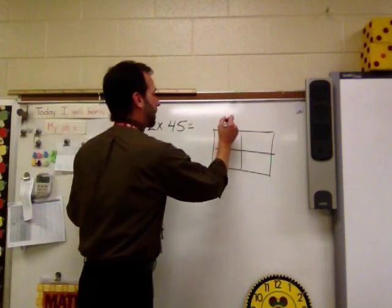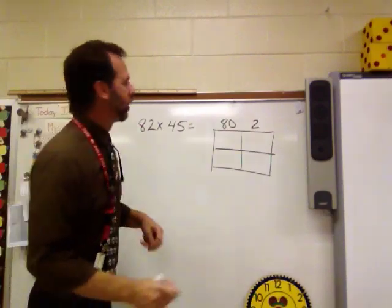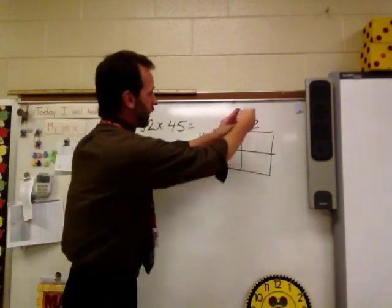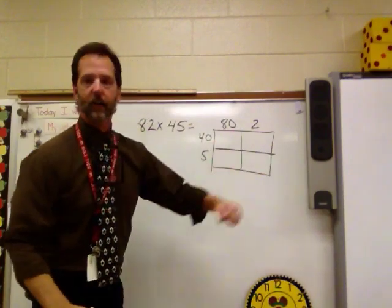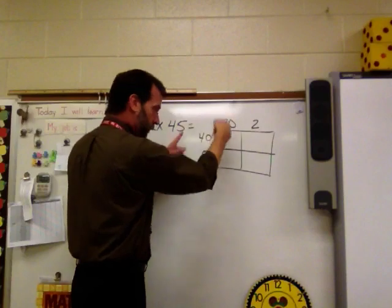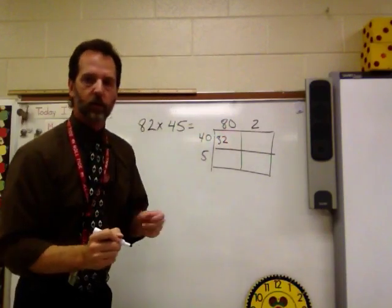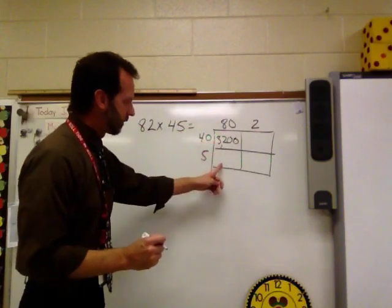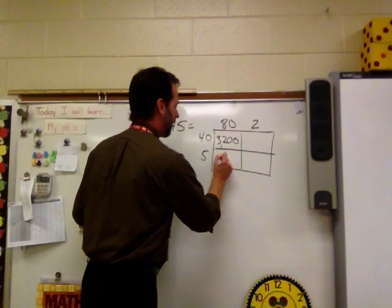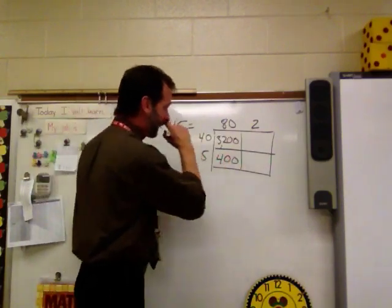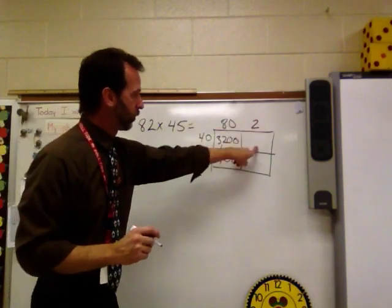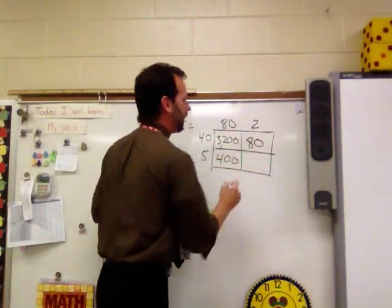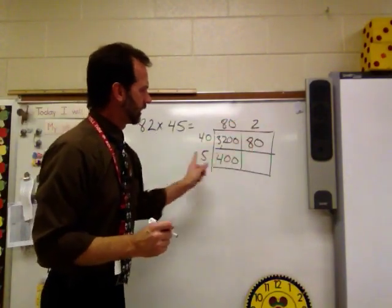We're going to put 80 and 2 to make 82. We're going to put 40 and 5 for 45. And now we're going to multiply. Remember, 80 comes down both boxes. The 2 comes down in both boxes. The 40 goes across and the 5 goes across. Ready? 8 times 4. We're going to do 80 times 40. 8 times 4 is 32. How many zeros? 2. One from the 80, one from the 40. 3,200 is what you get there. Coming straight down, the 80 comes down here. 8 times 5 is 40. And how many zeros do we have to add on? 1 from the 80. 80 times 5 is 400. Let's go to this box over here. 2 times 40. 2 times 4 is 8. How many zeros? 1. We get 80. And then finally, 2 times 5, which is 10.